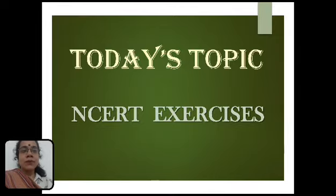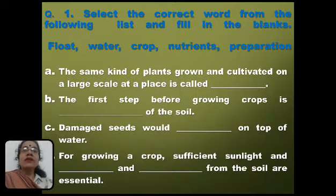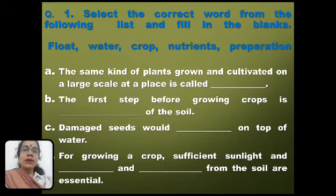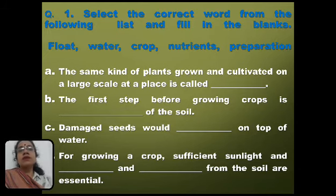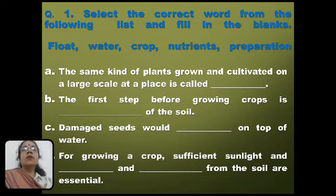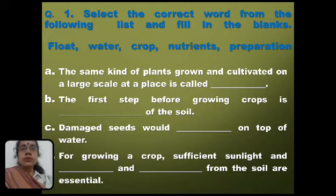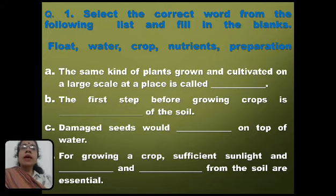The first question is: select the correct word from the following list and fill in the blank. The words given are float, water, crop, nutrients, and preparation. Among these words we have to choose the right word to fill the blanks. The first question is: the same kind of plants grown and cultivated on a large scale at a place is called?